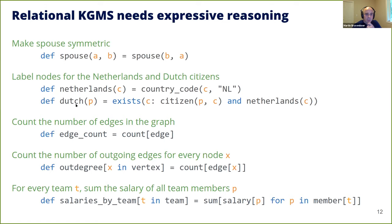A group-by aggregation example sums the salary of all team members P for every team T. REL supports arbitrary user-defined mutual recursion — any set of mutually recursive rules you want — and recursion can also involve aggregation. For example, shortest path takes the minimum over indirect edges from X to Y, combining the cost to an intermediate node and the remaining distance to Y. This is a very simple example; most SQL systems support this to some degree, but REL supports arbitrary user-defined mutual recursion.